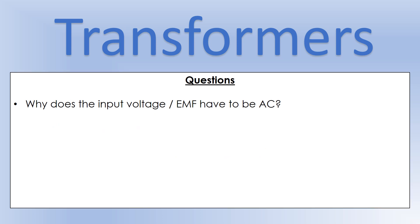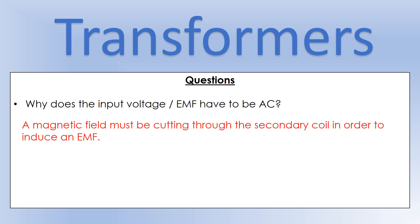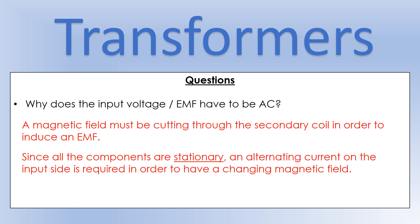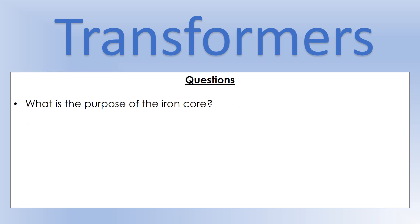Why does the input have to be alternating current? We are trying to induce an EMF in the secondary coil. Since the primary coil is stationary, for a stationary coil to induce a current in another stationary coil we need an alternating current to give us an alternating magnetic field — that's what gives us the flux lines cutting through the secondary coil. With DC, the magnetic field would be static and no current would be induced in the secondary coil.